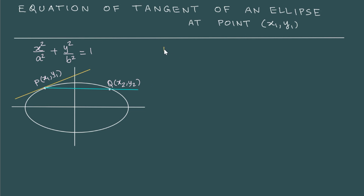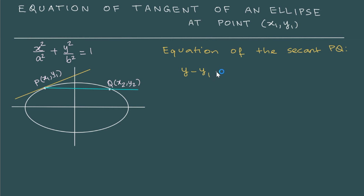Writing the equation of the secant PQ: y minus y1 is equal to the slope of the line, which is y2 minus y1 by x2 minus x1, multiplied by x minus x1.